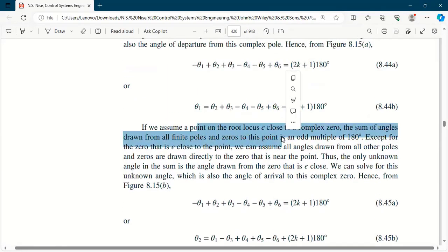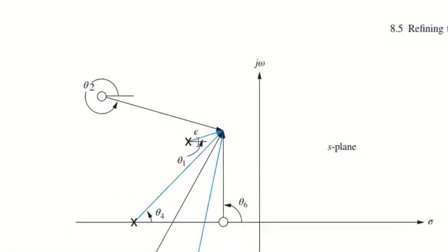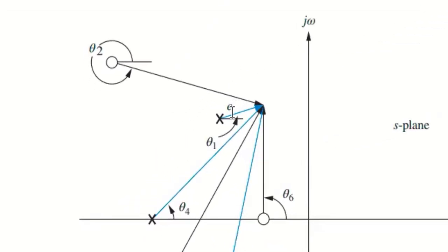If we assume a point on root locus epsilon close to a complex zero, the sum of angles drawn from all finite poles and zeros to this point is an odd multiple of 180 degrees. Except for the zero that is epsilon close to that point, we can assume all angles drawn from other poles and zeros are directly drawn to that nearby zero. The only unknown angle in the sum is the angle drawn from the zero that is epsilon close — we solve for this unknown angle, which is the angle of arrival to this complex zero.